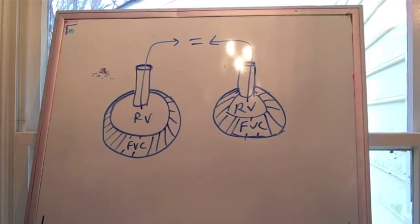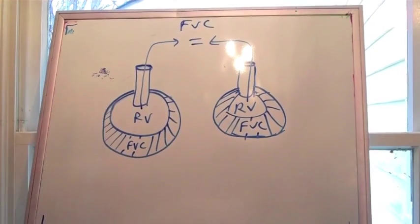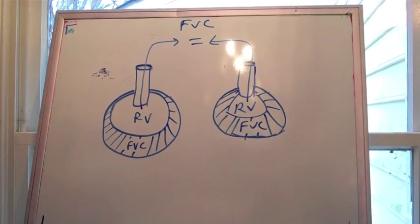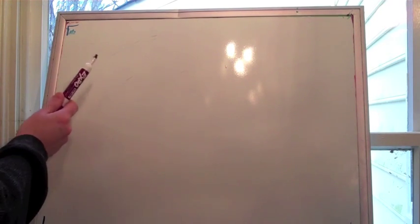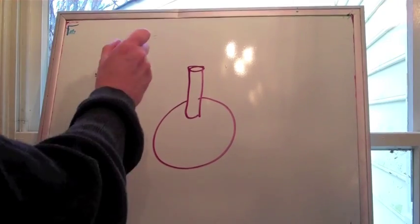Now, this gets to why you can't confirm restrictive lung disease or restriction with just spirometry. In these two lung examples, the forced vital capacity is the same, but the residual volume is much lower on the other. How can you measure that residual volume if you can't breathe all your air out?